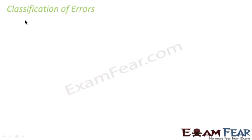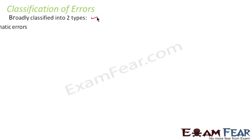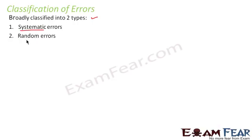Classification of errors: errors are broadly classified into two types. The first is systematic errors, and the second is random errors. We will discuss each of them in detail.